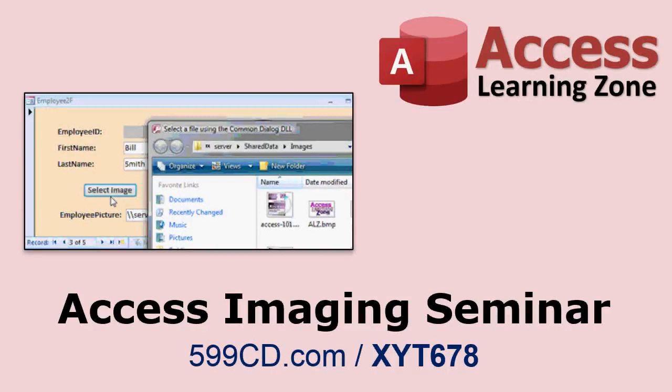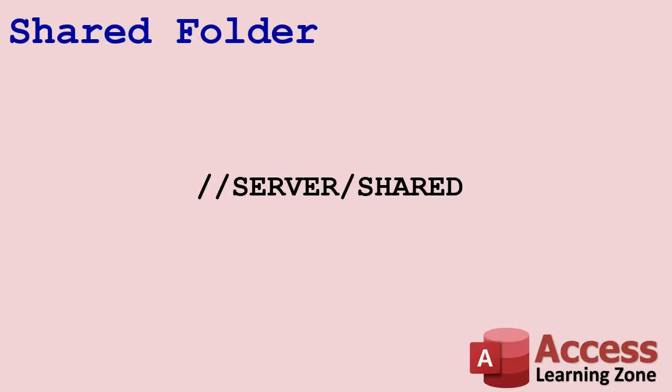So basically, you now have a Windows or networking problem — you just need to map everyone to that specific shared folder. If someone picks a file on their local C drive, they select it, hit go, and Access will copy it up to the server and save that link in the database so everyone can use it. At that point it's just a matter of mapping — for example, a server shared as a network shared folder.